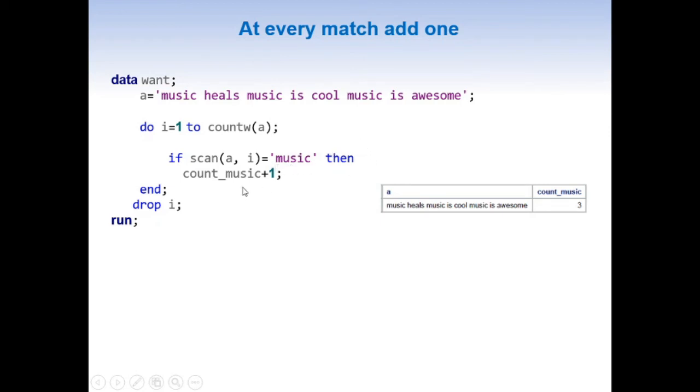Now all we need to add here is to IF scan a comma i equal to music, we need to add then count underscore music plus one. This is known as sum statement and it starts with zero and then whenever there is a match, when a one equal to music, as this is the same music equal to music, then it becomes 0 plus 1, 1.